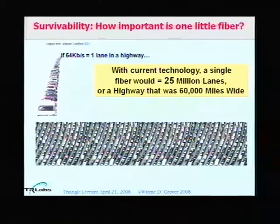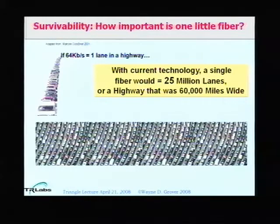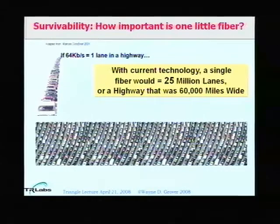Often in our work we're asked to make analogies for lay people. In transport networking it's often something to do with trucks. For example, if a 64-kilobit highway was one lane, the fiber optic would be a highway 60,000 miles wide with 25 million lanes. There's something wrong with that analogy in scaling to ordinary daily life, but it conveys the almost unimaginable amount of capacity on a single fiber.